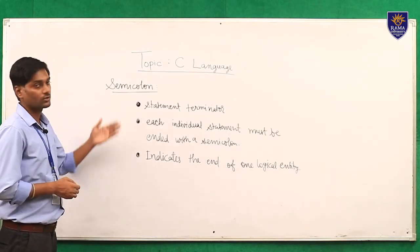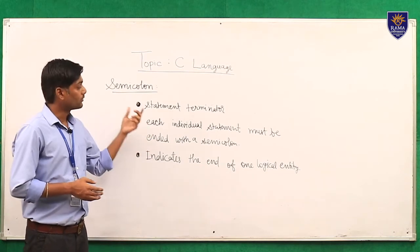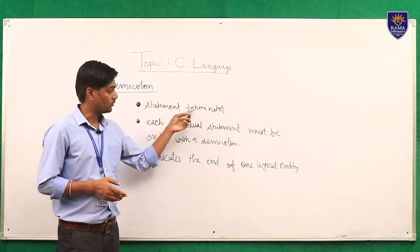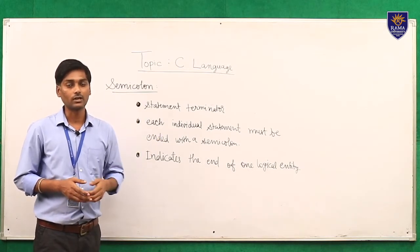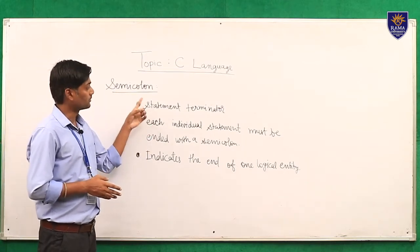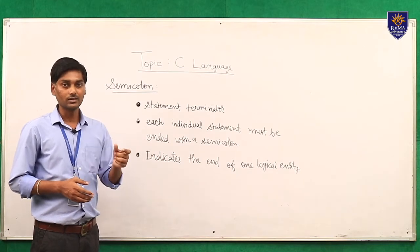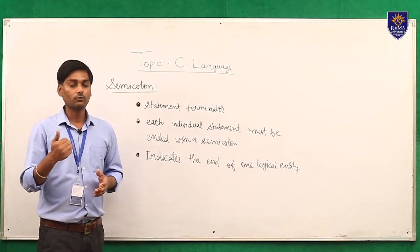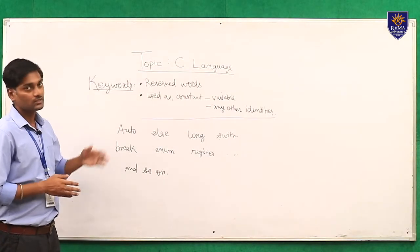The second terminology is semicolon. A semicolon is a statement terminator — when we write a program, we use a semicolon to end each logical instruction. Each individual statement must end with a semicolon. It indicates the end of a logical entity in every programming language — when one logical task is completed, we use a semicolon.